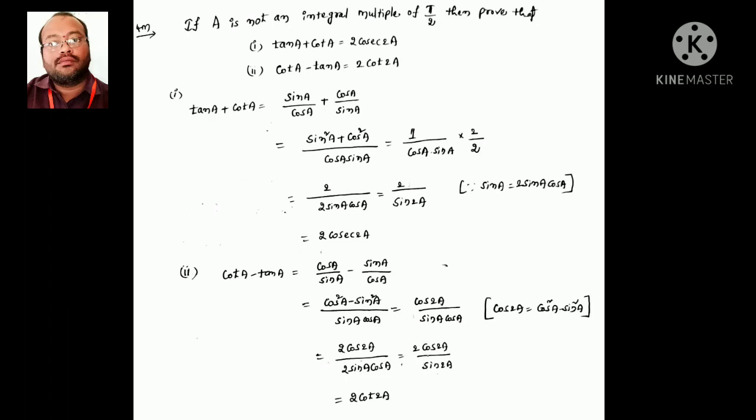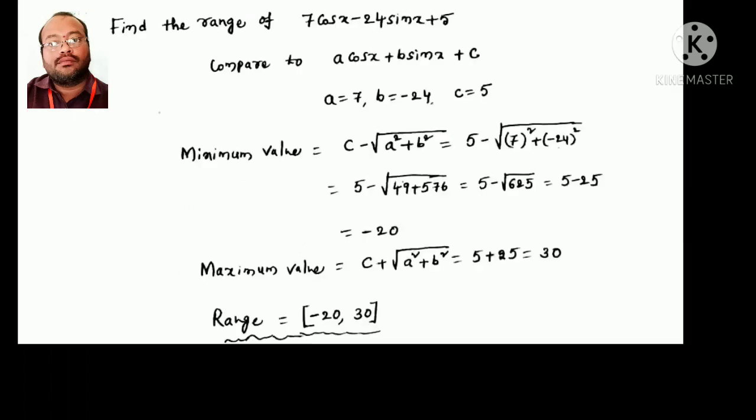For cot a − tan a: replacing again, we get (cos²a − sin²a)/(sin a·cos a) = cos2a/(sin a·cos a). Multiplying and dividing by 2 gives 2cos2a/sin2a = 2cot2a.